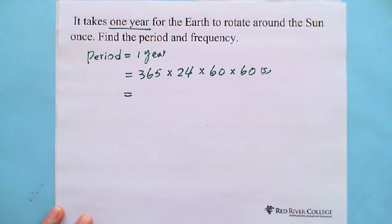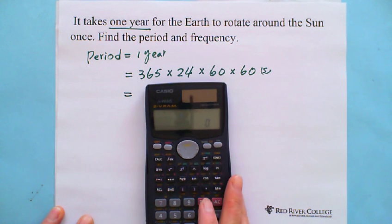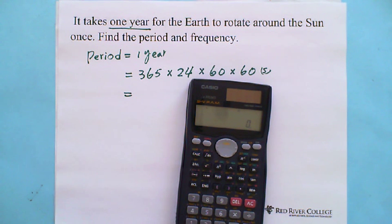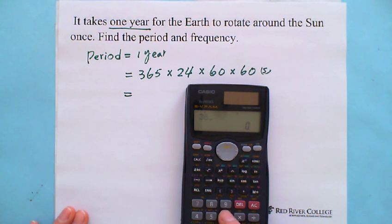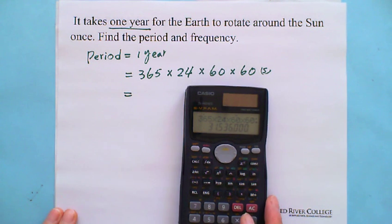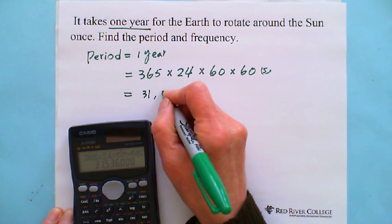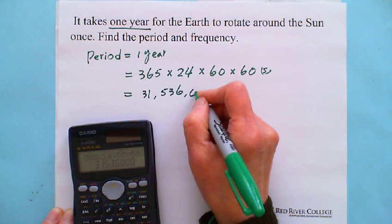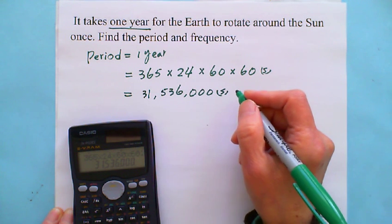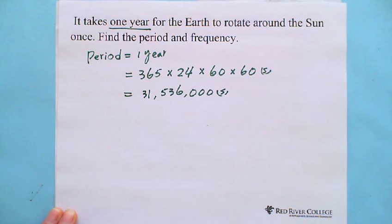We can calculate all this number. We got the answer. We use 365, multiply 24, multiply 60, and multiply another 60. So 31,536,000 seconds. And what is the frequency?